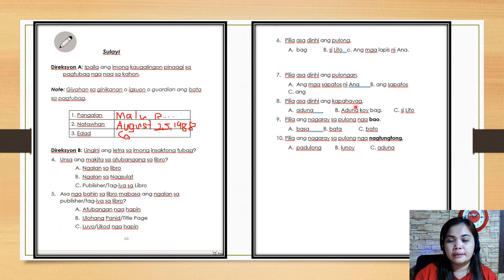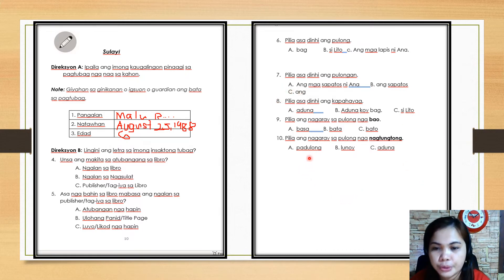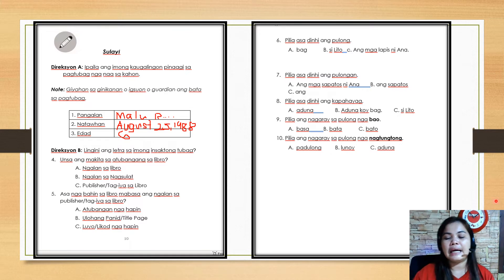Let's just skip number seven and number eight. Let's proceed to number nine. Choose which word that rhymes with the word bao. Letter A, B: bata, letter C: bato. Number ten: choose the word that rhymes with nagtongtong. Letter A: padulong, B: lunoy, C: adong.